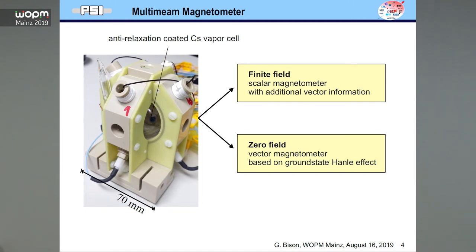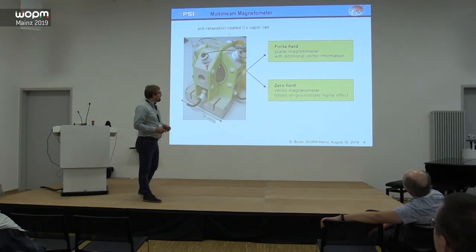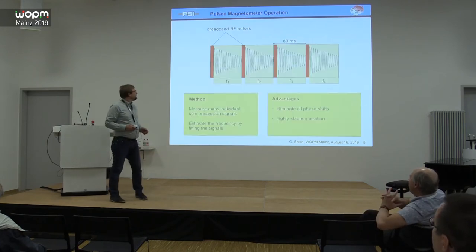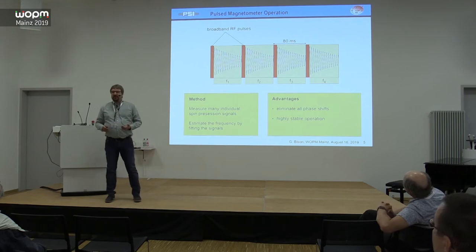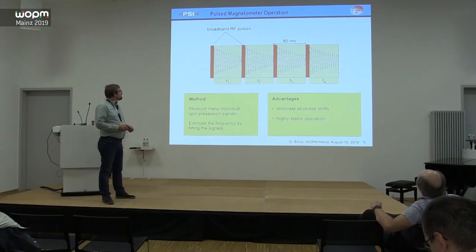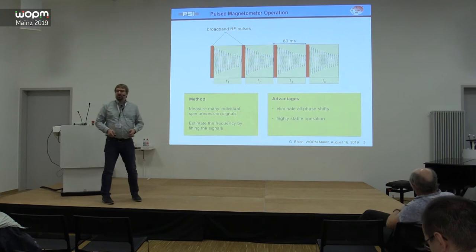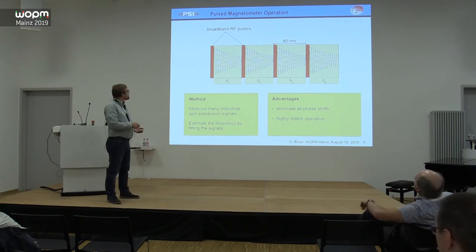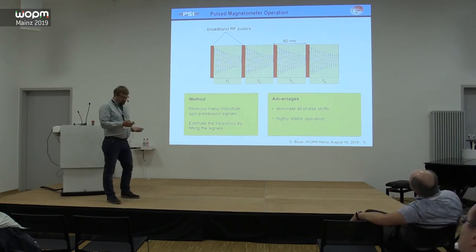In finite fields it's a scalar magnetometer. In zero field it's a vector magnetometer. That's basically the outline of the talk. Let's start with finite fields. We also work in a pulsed regime in order not to have any feedback problems and phase shifts that could compromise our accuracy and stability. What we do is we record free spin precession signals, fit the frequency and then we get scalar magnetic field measurements.